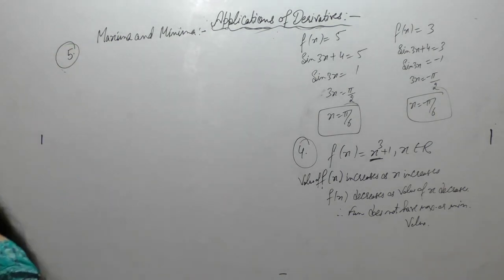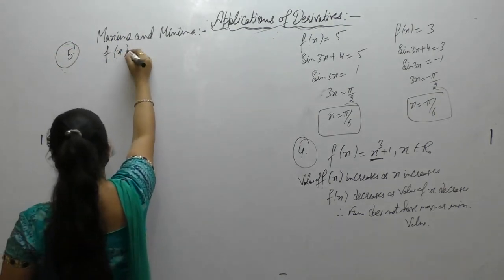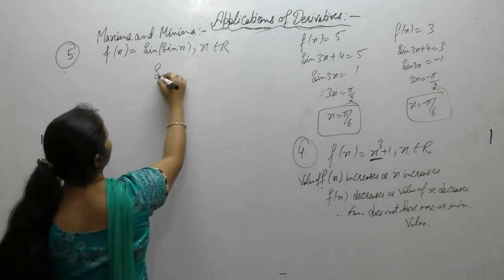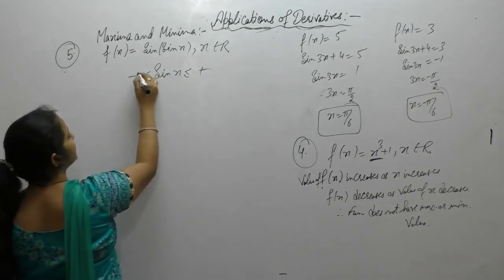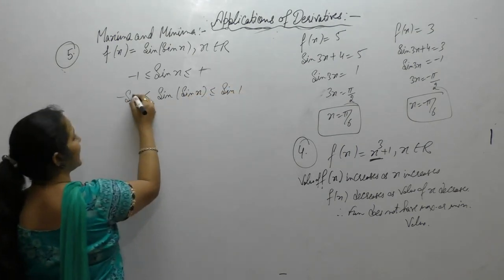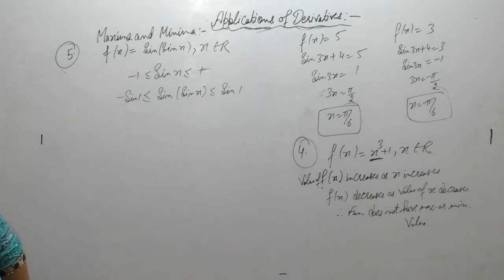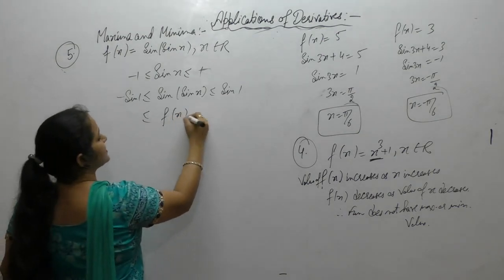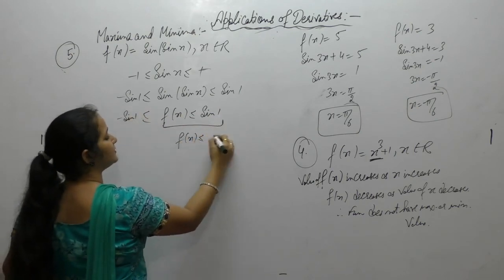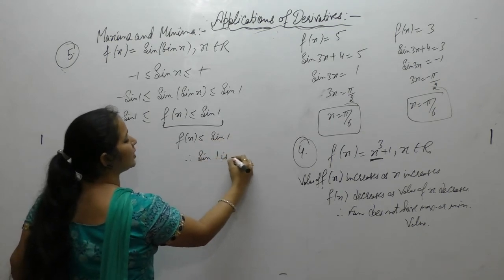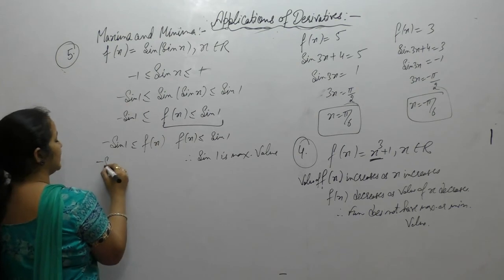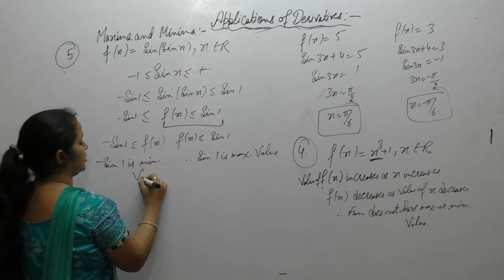Next is f(x) equal to sin(sin x), where x belongs to real numbers. We know that the value of sin x lies between minus 1 and 1. Taking sine on both sides, and using the identity that sine is an odd function, f(x) lies between minus sine 1 and sine 1. Therefore, sine 1 is the maximum value of the function, and minus sine 1 is the minimum value of the function.